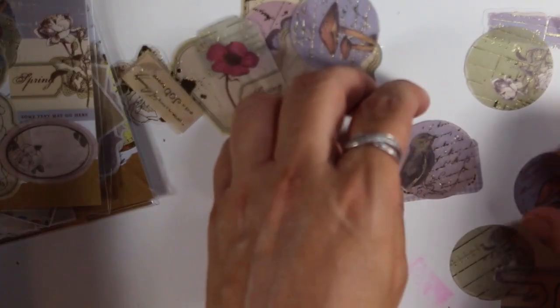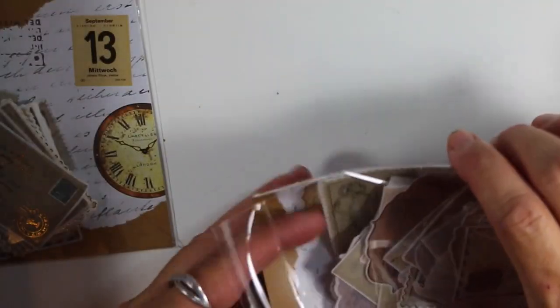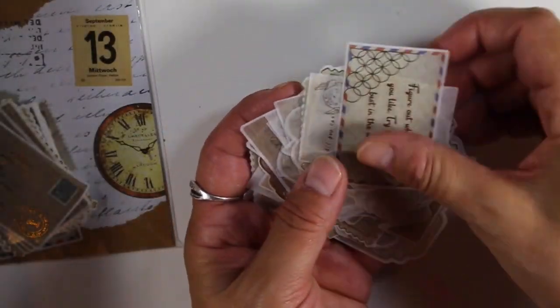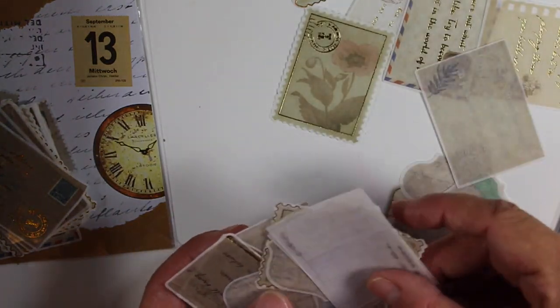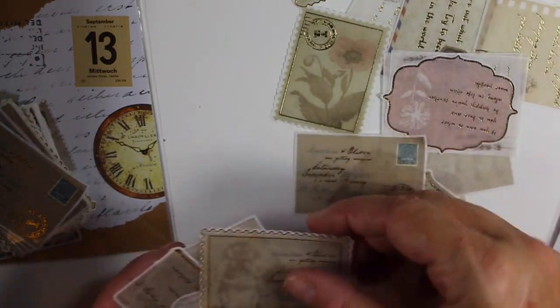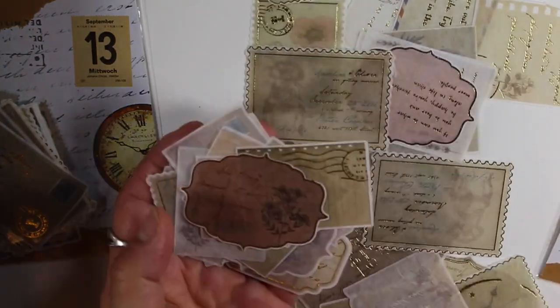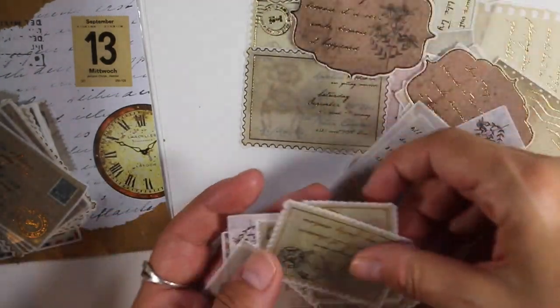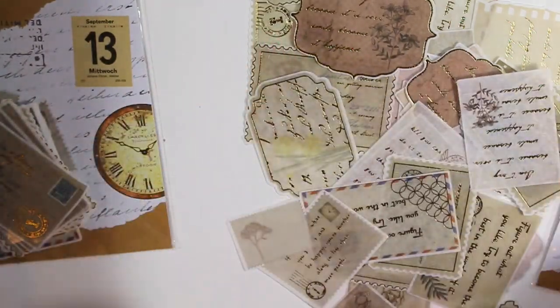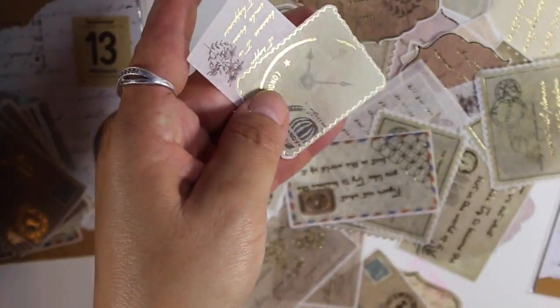I'll show you really quick what's in here. There's two of each of these. You can see the gold foiling on these. These are really nice. I will definitely buy these again. You can see the shimmer of them and they're washi stickers.